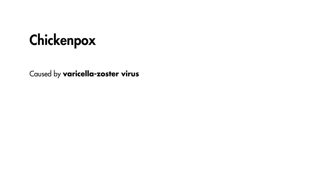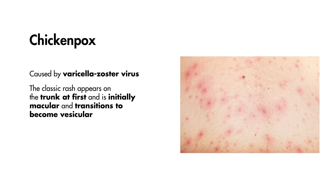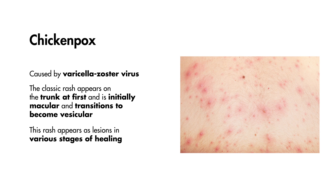Chickenpox is caused by varicella zoster virus. The classic rash appears on the trunk at first and is initially macular and transitions to become vesicular. Classically, this rash appears as lesions in various stages of healing.